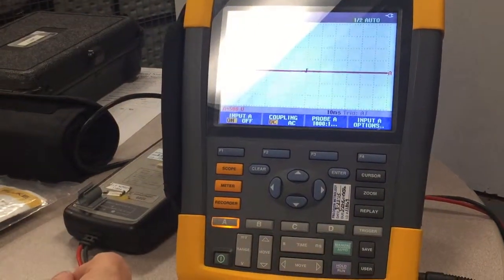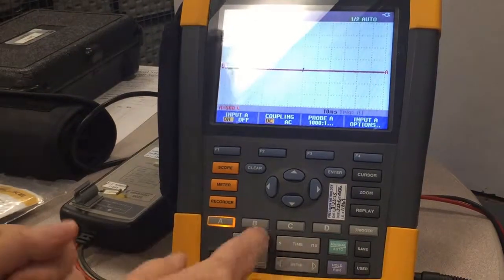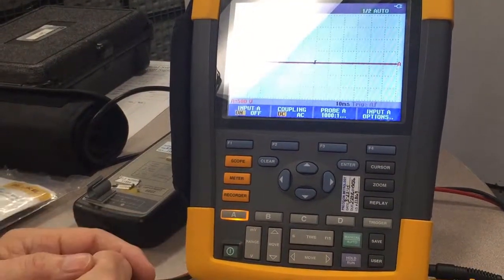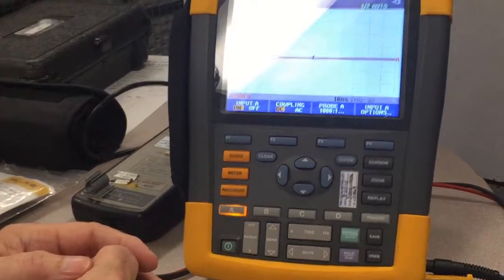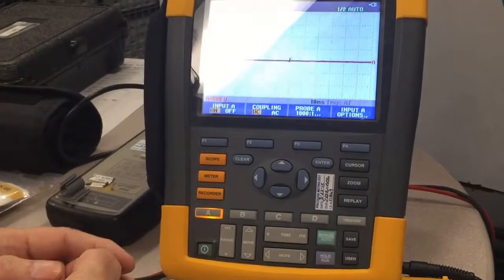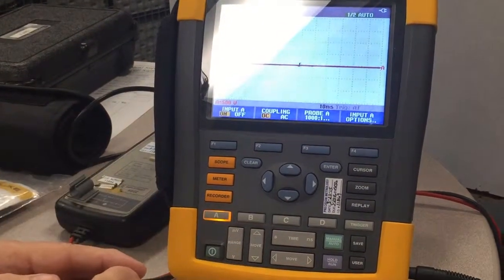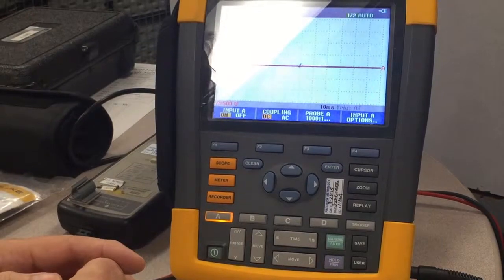The next thing we're going to do is we're going to set our time set. In this demo, we're going to be looking at the output of the drive when it's running 60 hertz. The 60 hertz period is about 16 milliseconds. I like to start out with looking at approximately two cycles. That would be 32 milliseconds.